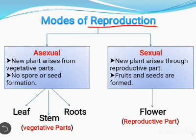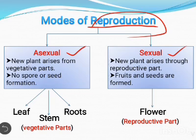Reproduction is the only process which allows living organisms to continue to live on the earth from one generation to the next generation. Now, come to the type of reproduction. Reproduction in plants occurs in two ways: the first one is asexual reproduction and the second one is sexual reproduction.